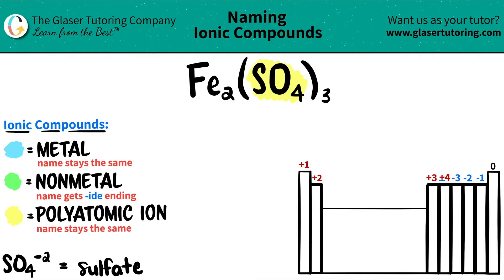Iron is over here on the periodic table. So since it's part of the transition metals, literally transition metal, it's a metal.